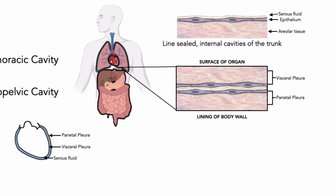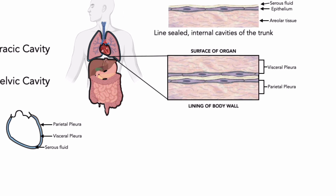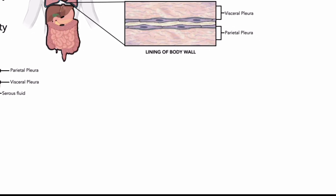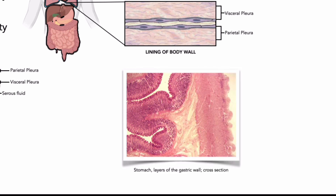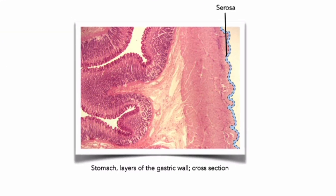The outermost parietal layer lines the inner surface of the abdominal-pelvic cavity, with the visceral layer lining the surface of the visceral organs. The serosa can be clearly viewed as the outer layer covering the stomach in a micrograph showing the layers of the gastric wall. We will discuss in much greater detail the anatomy, physiology, and pathology associated with these serous membranes in modules dealing with the respiratory, cardiovascular, and abdominal-pelvic systems.